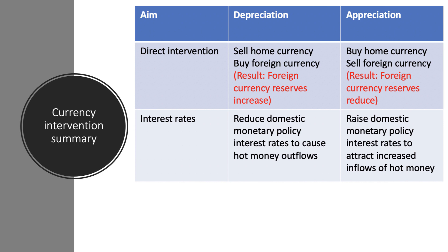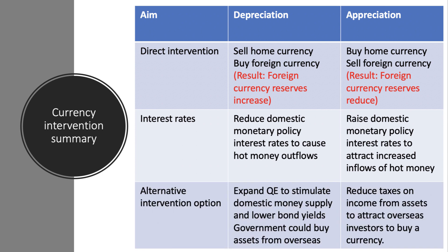The second intervention option is through interest rates. If you want your currency to depreciate, one option is to lower interest rates, causing a hot money outflow or reducing hot money inflow — either way the currency falls. If you want the currency to appreciate, raise interest rates to attract hot money inflows. The danger is that higher interest rates could damage consumer spending, business confidence, and the housing market — a trade-off. Alternatively, expanding quantitative easing increases the domestic money supply, some of which seeps out of the economy, bringing the exchange rate down.